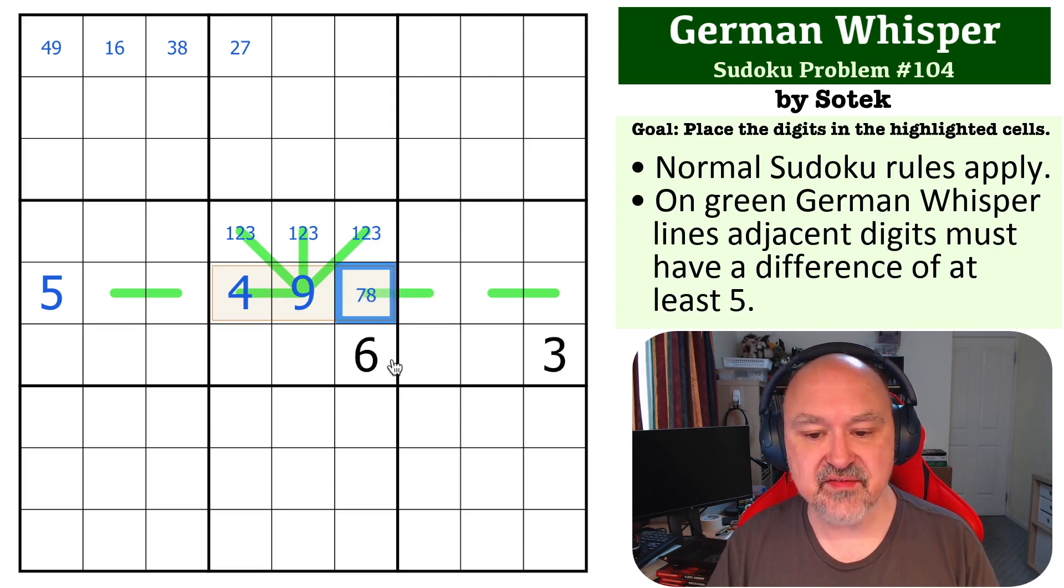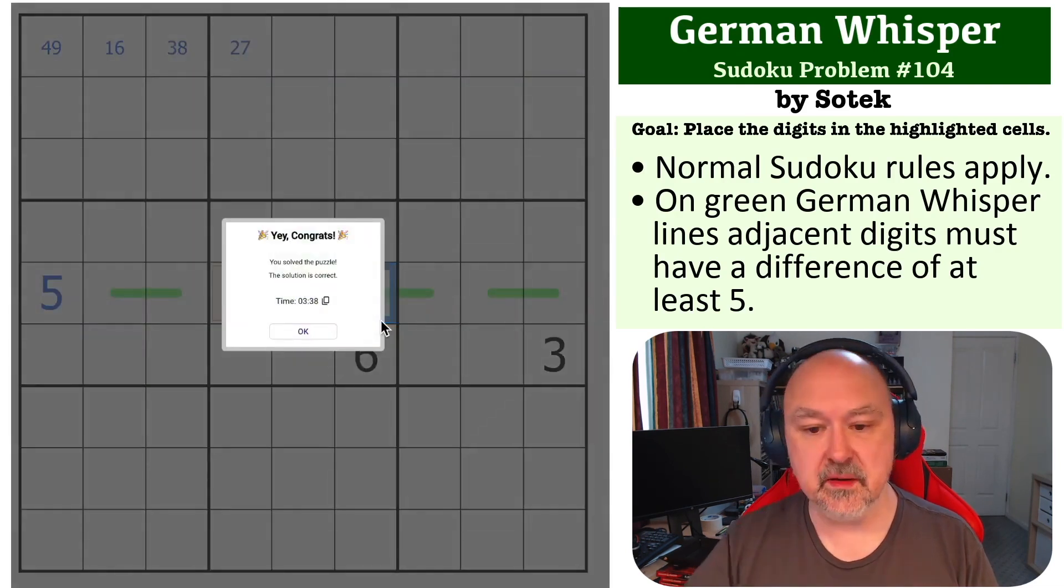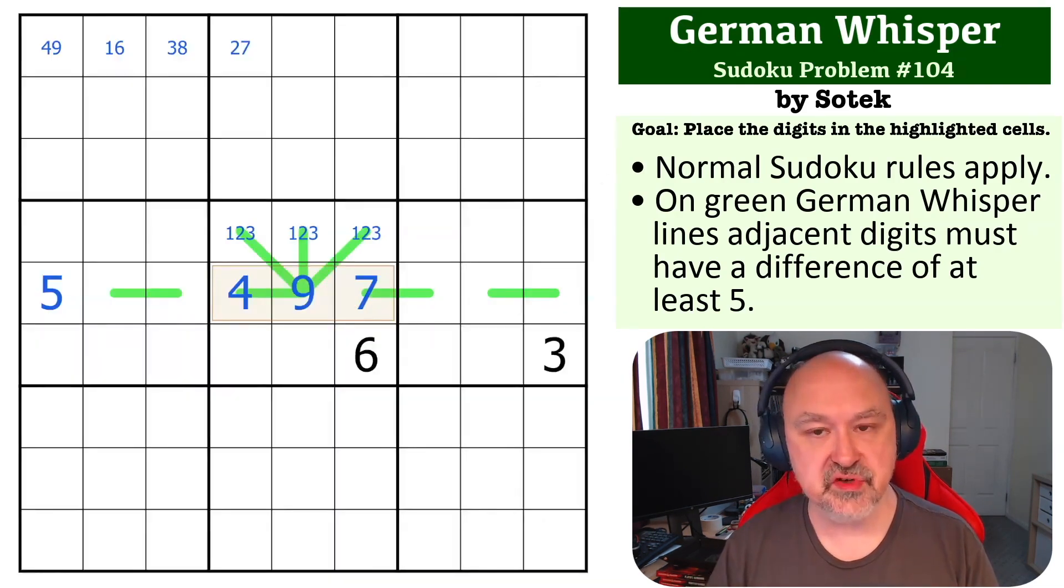Now because this is seven eight we know that the seven must go with the two and the three must go with the eight. So if this is eight this is three and it can't be. So this becomes the seven and that's the solution to the problem.